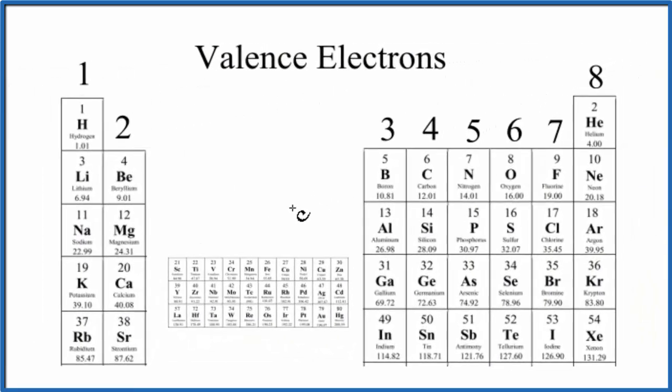For valence electrons, that's a little bit easier. Group one, one valence electron. Group two has two. Again, skip those transition metals, three, four, five, six, seven, and so on.